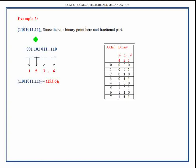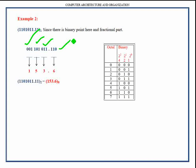Partitioning the integer part gives two complete groups of three digits, and the third group has only one digit, so we add two more zeros to complete it. In the fractional part there are only two digits, so we add one zero to make a complete group. Now we have completed the partitioning and can assign the octal equivalent value for each group of three binary digits.